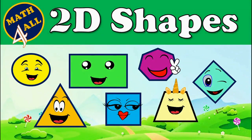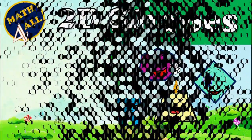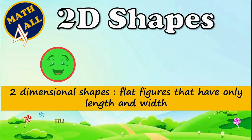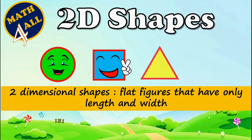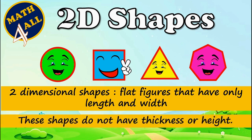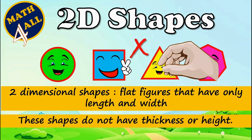Hi, today let's learn 2D shapes! Here we go. 2D shapes, or two-dimensional shapes, are flat figures that have only length and width. These shapes don't have thickness or height, so you can't hold them because there is no thickness. Now let's start with our first shape.